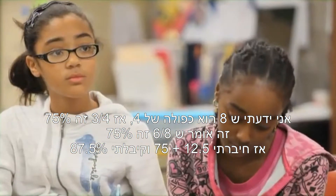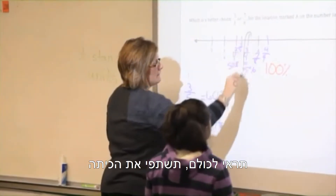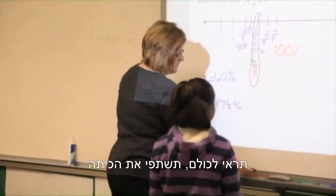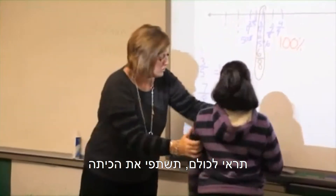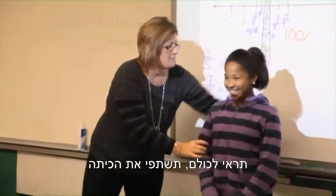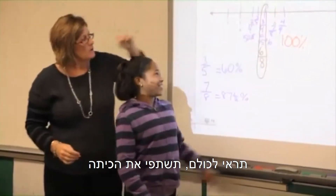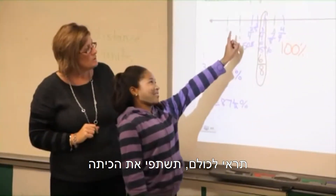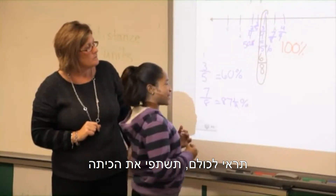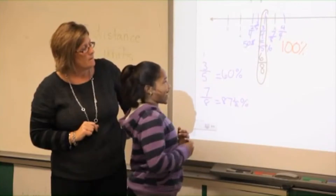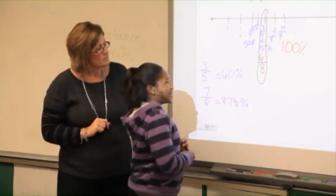We also had 6 eighths, right? So you were looking here at this, right? Can you share? Just come on over here and point to the fractions you were talking about. Okay, I knew that 6 eighths was equal to 3 fourths, which is 75%, so I added 12.5% to 75%.